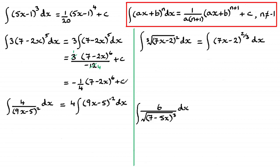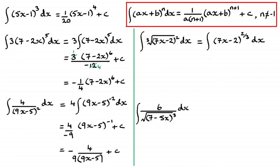For the next example dealing with the reciprocal form, I add 1 to the power of minus 2, giving minus 1. I divide by minus 1 times 9, which is minus 9. So I end up with 4 over minus 9 times 9x minus 5 to the power minus 1, which simplifies to minus 4 ninths times 9x minus 5 to the power minus 1, plus c.